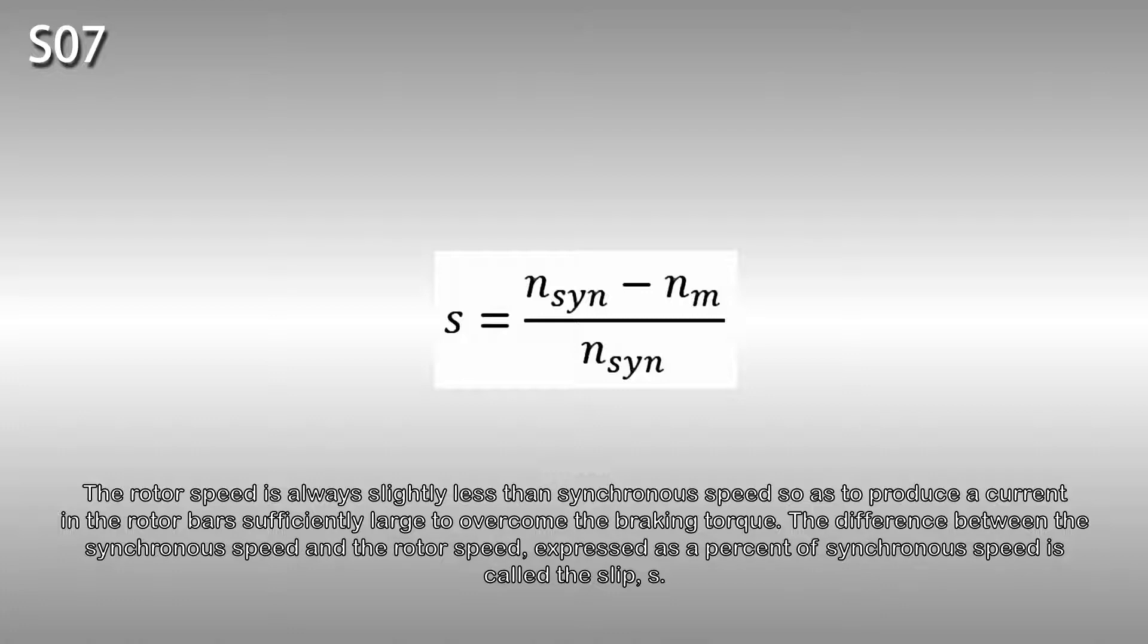The difference between the synchronous speed and the rotor speed, expressed as a percentage of synchronous speed, is called the slip S.